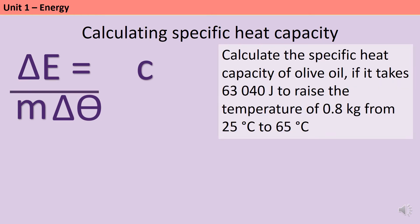Let's say we were asked to calculate the specific heat capacity of olive oil, and we know that it takes 63,040 joules to raise the temperature of 0.8 kilograms from 25 degrees to 65 degrees. To start with I don't have all the terms from this equation. I don't actually have temperature change yet, so the first thing I need to do is work out what that temperature change will be. 65 take 25 is 40 degrees C.